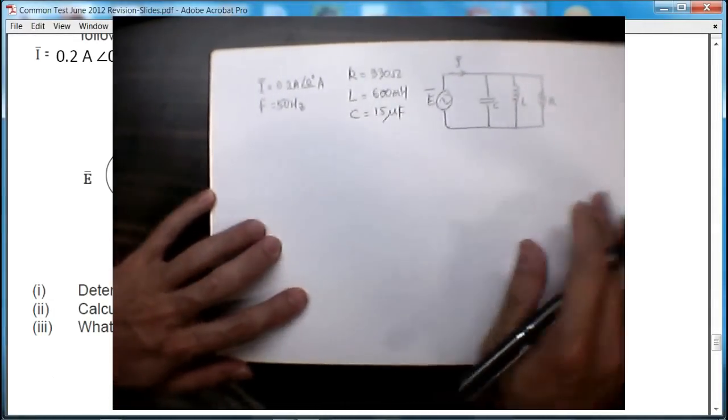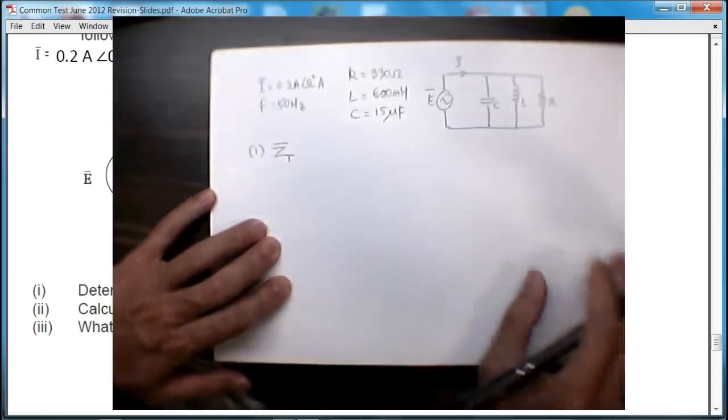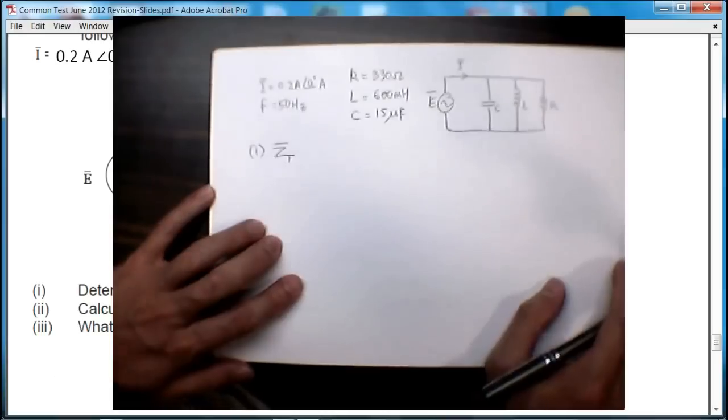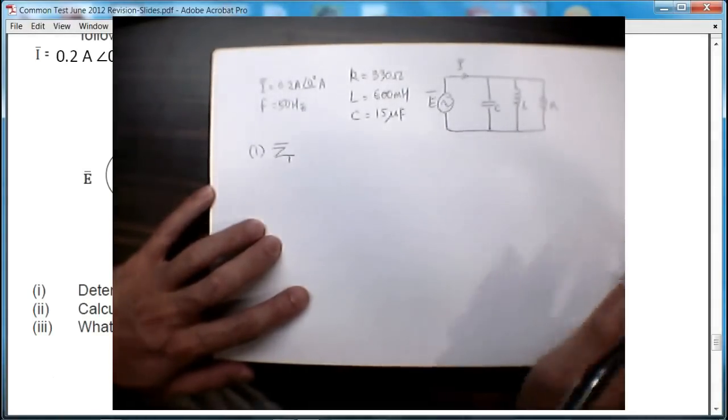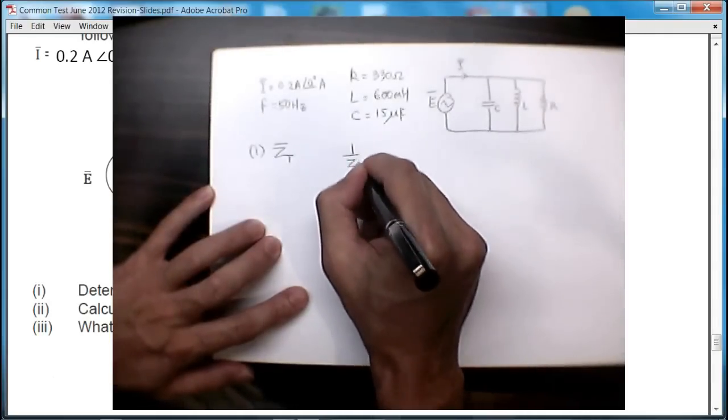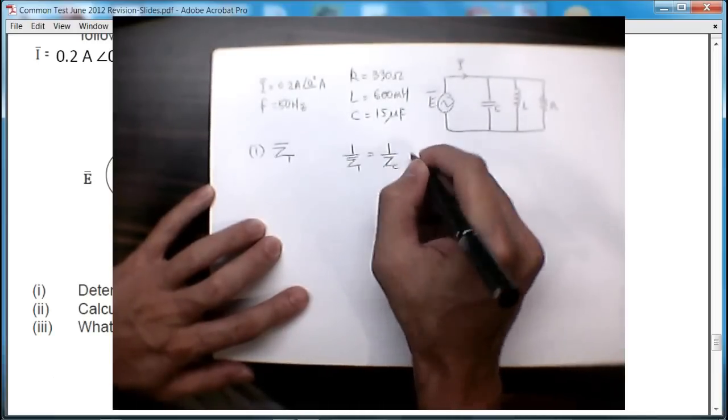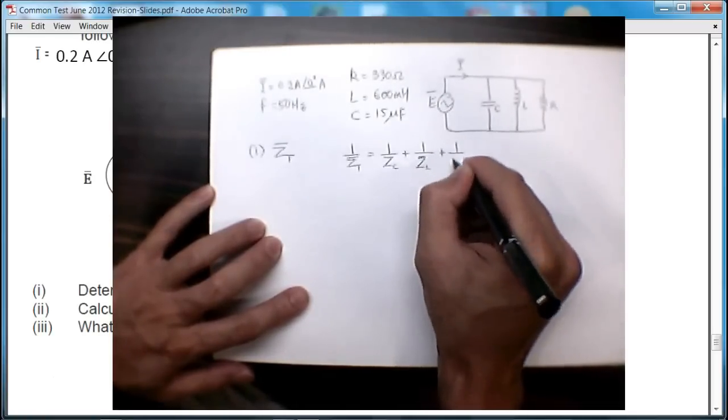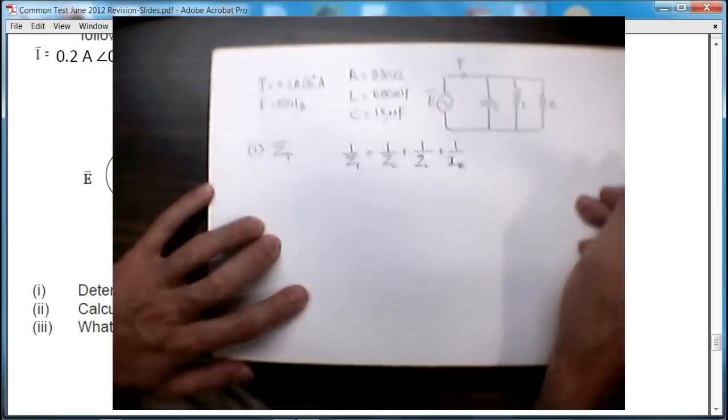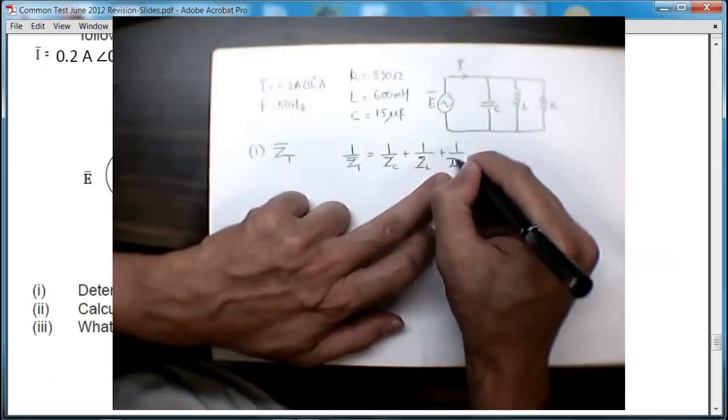So the first thing to do is we want to find the total impedance ZT. Now we know from impedance in parallel: 1 upon ZT equals 1 upon ZC plus 1 upon ZL plus 1 upon the resistor. So in order to do the calculation, we have to determine the impedance of each of these elements separately.